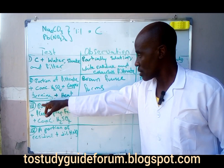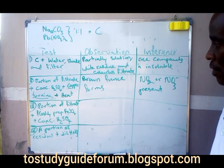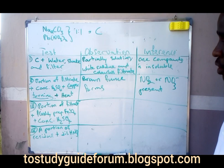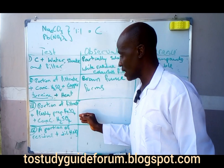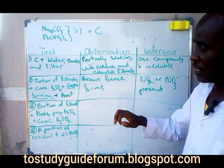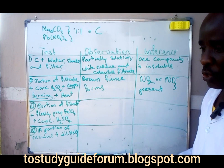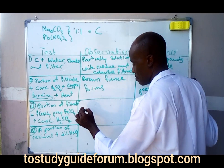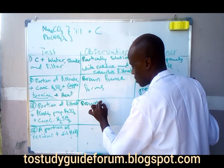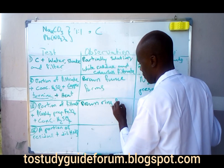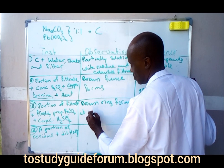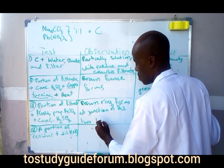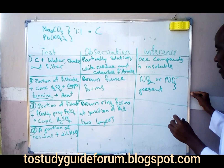For the next test, take a portion of the filtrate plus freshly prepared iron(II) tetraoxosulfate(VI) solution, then gently pour concentrated acid from the side into the test tube. You will observe a brown ring that forms at the junction of the two layers. This confirms the presence of nitrate ions.